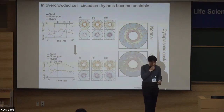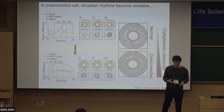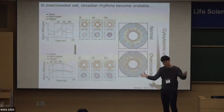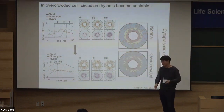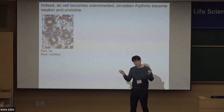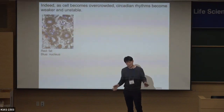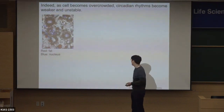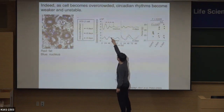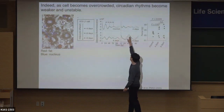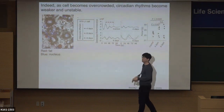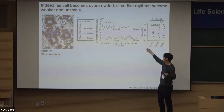We wanted to validate this model prediction experimentally. How to make the cell more overcrowded? One way is using adipocytes — we put more artificial fat inside the cell. Without that, there is a normal circadian rhythm. But when we put more fat inside the cell, the circadian rhythm becomes very unstable and super long.